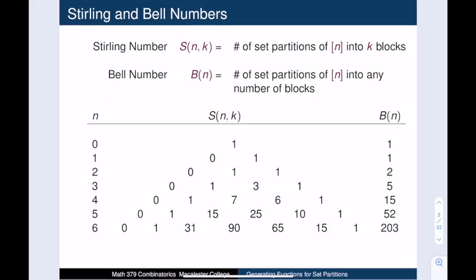Here we see the Stirling triangle. The nth row contains the values of S(n,k). Note that S(0,0) is equal to 1 because the empty partition is a valid set partition of the empty set. We also note that when n is greater than 0, the Stirling number S(n,0) is defined and equal to 0 because it is impossible to partition a non-empty set into 0 blocks.